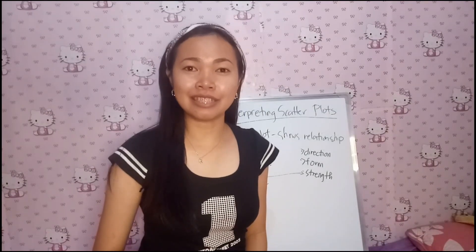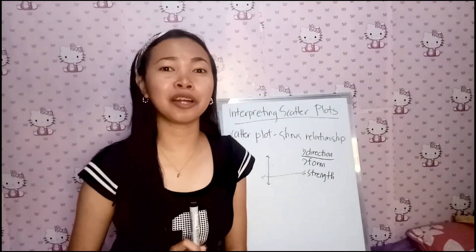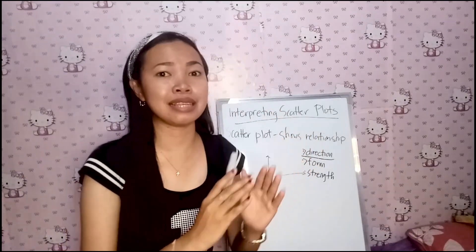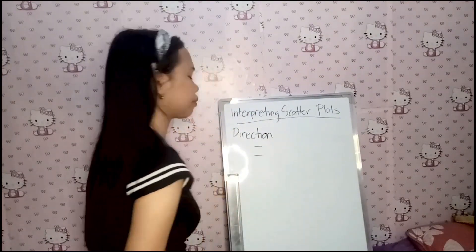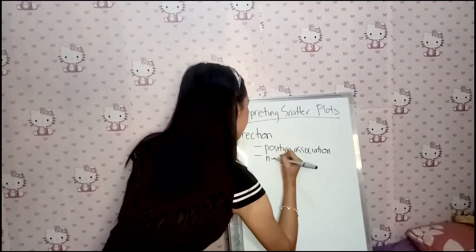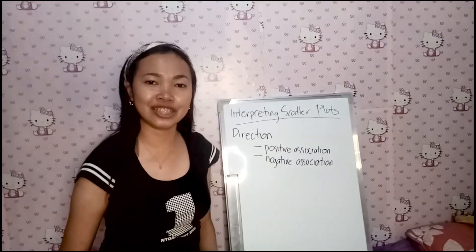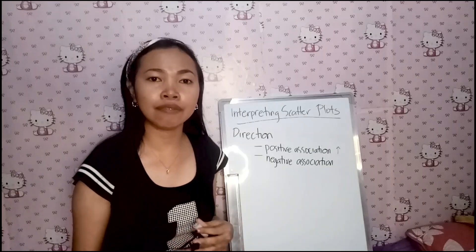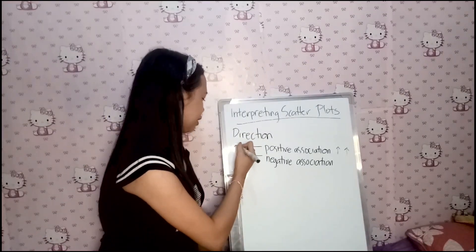Now, let us interpret scatterplots based on their direction. One important component to a scatterplot is the direction of the relationship between two variables. For its direction, we have positive association and negative association. Two variables have a positive association when above-average values of one tend to accompany above-average values of the other, and when below-average values of one tend to occur together.